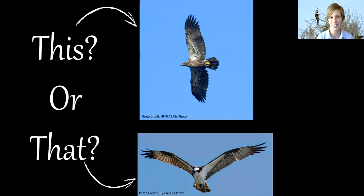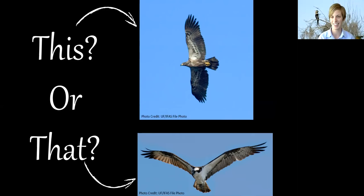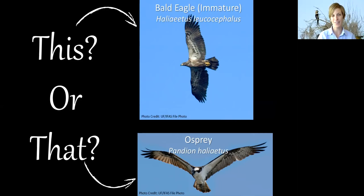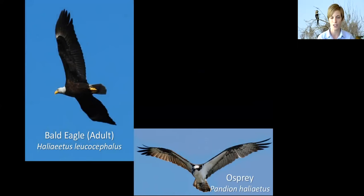I'll just ask for a raise of hand if you know the difference between these two species — raise your hand if you know which is which. Looks like we've got some professionals in the group today. Awesome. So if you knew correctly, hopefully this is what you were thinking: on the top we have a bald eagle — actually an immature bald eagle, which looks quite different from the mature bald eagle. And on the bottom we have the osprey, sometimes called the fish hawk.